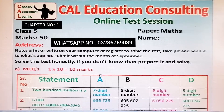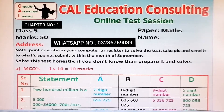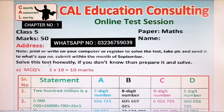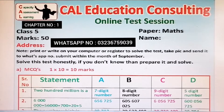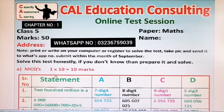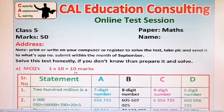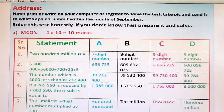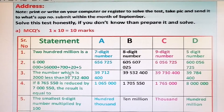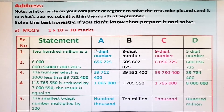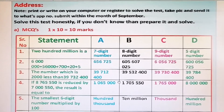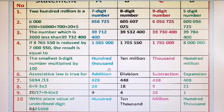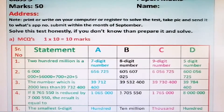The test comprises three parts. The first part is MCQs, which contains 10 marks. As you can see here, the statement is written in green and then options are given as A, B, C, D. You have to mark the correct option.